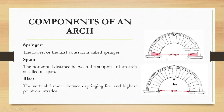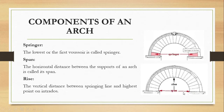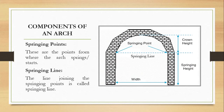The springer is the lowest first voussoir in an arch, and there are always two springers in an arch. The span is the horizontal distance between the supports of an arch, or the horizontal distance between the springing points. Rise is the vertical distance between the springing line and the highest point on the intrados. Do not confuse rise with crown height, which is the vertical distance from the springing points to the highest point on the extrados.